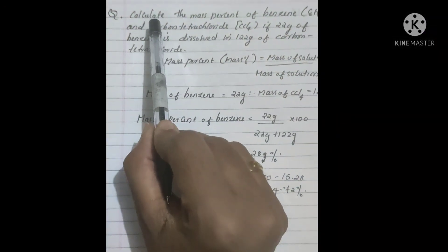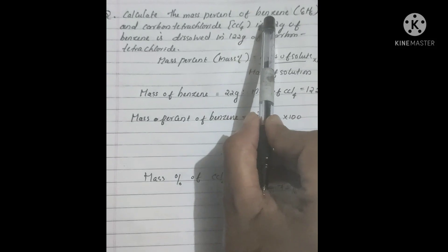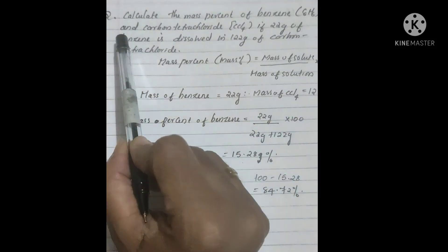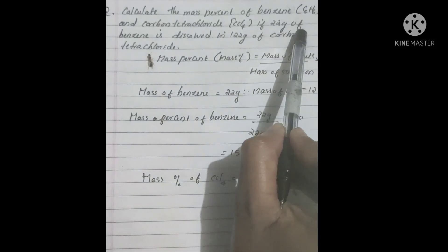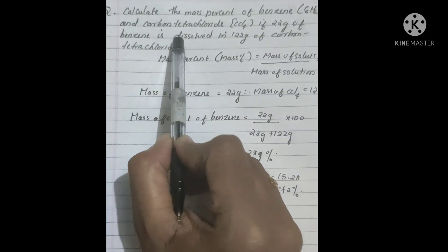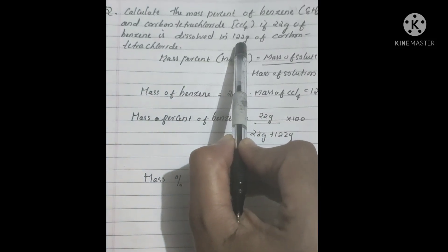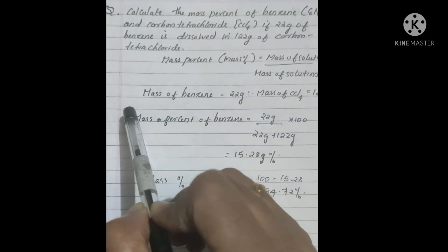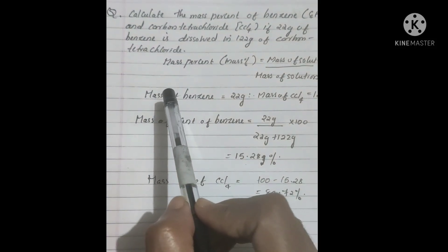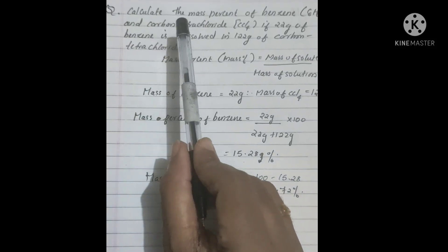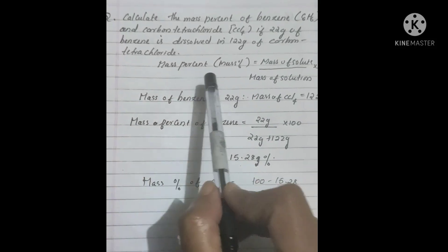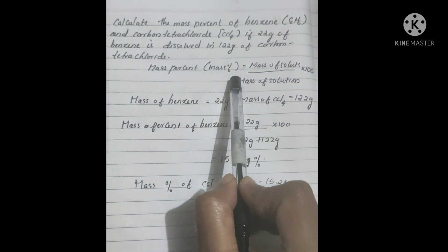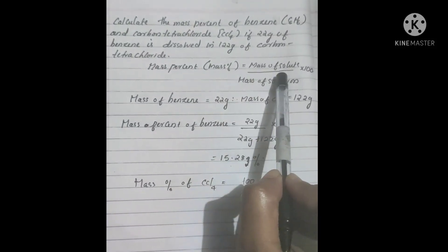Question: Calculate the mass percent of benzene C6H6 and carbon tetrachloride CCl4, if 22 grams of benzene is dissolved in 122 grams of carbon tetrachloride. We have to calculate the mass percentage of benzene. Mass percentage equals mass of the solute divided by mass of the solution, multiplied by 100.